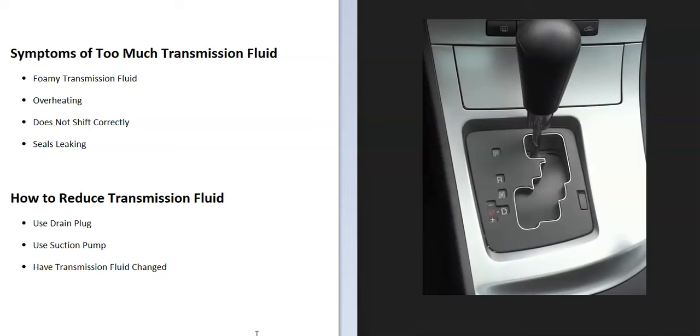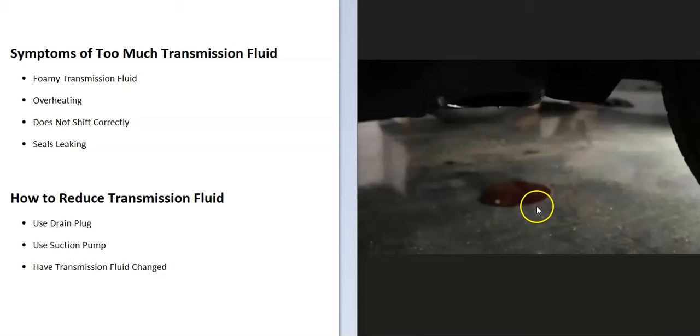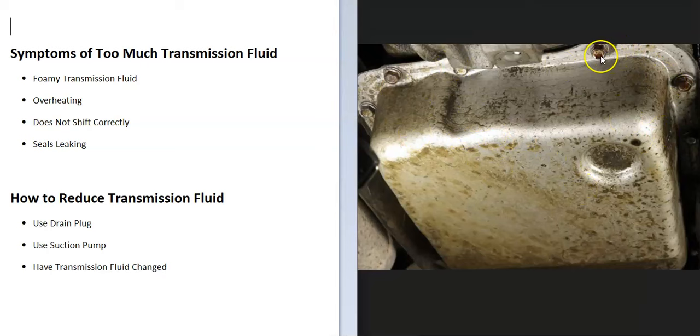Another symptom that can happen is that the seals start to leak because there's so much pressure inside that it's pushing out on all the seals. Usually when this happens you'll start to see a puddle of transmission fluid underneath the vehicle. It can really vary - if it's just starting to leak, it might just have a little bit around some of the bolts or something along those lines.